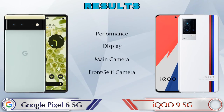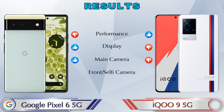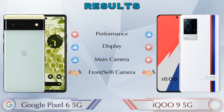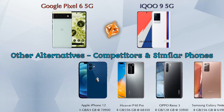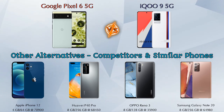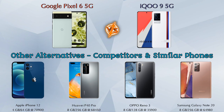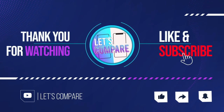Finally, talking about results: in performance, iQOO 9 5G is ahead; in display, Pixel 6 5G is ahead; in main camera, Pixel 6 5G is ahead; in front selfie camera, both phones are the same. Other competitors at the same price include Apple iPhone 12, Huawei P40 Pro, Oppo Reno 3, and Samsung Galaxy Note 20. Details about all competitor phones are available in the description. If you like our video, please like and subscribe — thanks for watching.